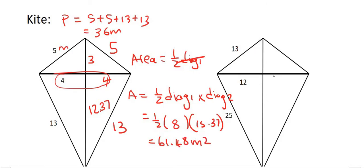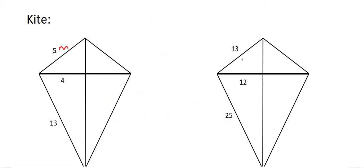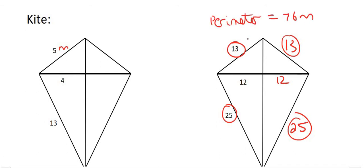Why not pause the video and try the next one yourself, if you would like? And so, moving on to the next one, we know that this is a kite, and so all of these sides are the same. That's 25, and this would also be the same. That's 12. Now, to work out the perimeter, that's very easy. You just say 13 plus 25 plus 25 plus 13. You just add them all together, and so the perimeter is going to end up being 76, and let's say, meters.